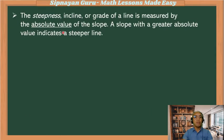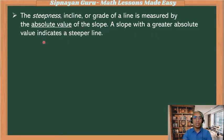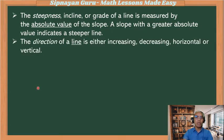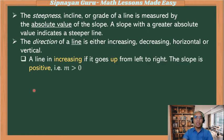The steepness, incline, or grade of a line is measured by the absolute value of the slope. A slope with a greater absolute value indicates a steeper line. The direction of the line is either increasing, decreasing, horizontal, or vertical. The line is increasing if it goes up from left to right, and the slope of this line is positive, meaning m is greater than zero.